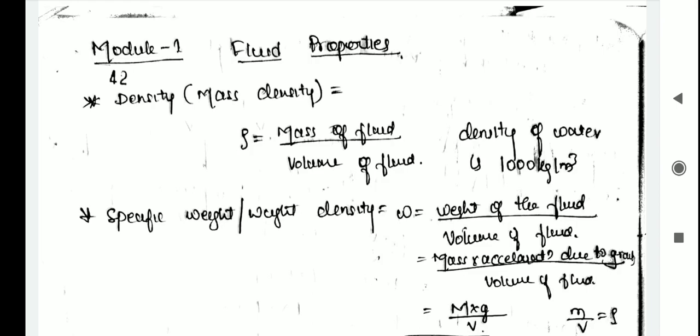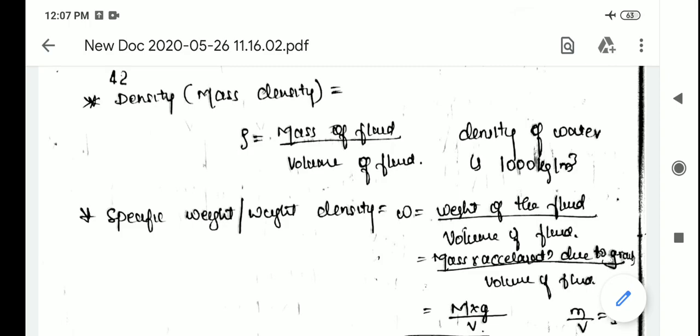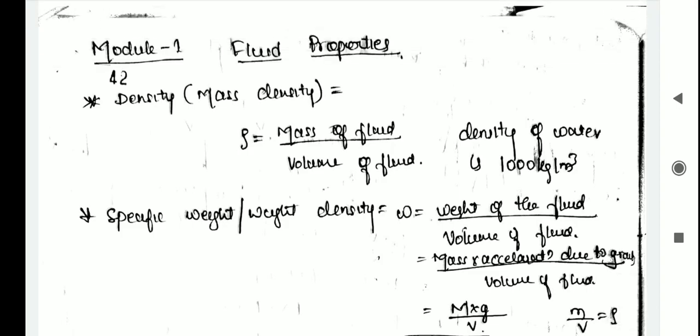The density of a liquid may be calculated as a constant, while for gases it changes with variation of pressure and temperature. Mass density rho is given by mass of the fluid divided by volume of the fluid. The density of water is 1000 kg per meter cube.